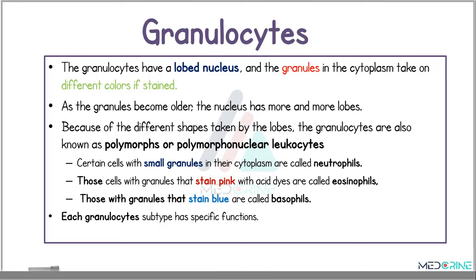The granulocytes have a lobed nucleus, and the granules in the cytoplasm take different colors when stained. As the cells become older, the nucleus has more and more lobes. Because of the different shapes taken by the lobes, the granulocytes are also known as polymorphs or polymorphonuclear cells. Cells with small granules are known as neutrophils; those with granules that stain pink with acid dyes are known as eosinophils; and those whose granules stain blue are known as basophils.